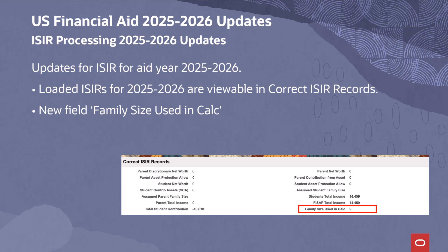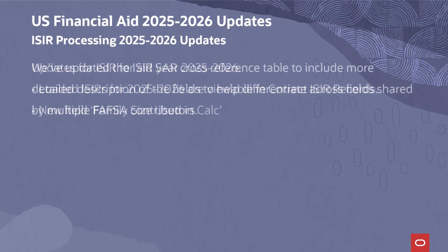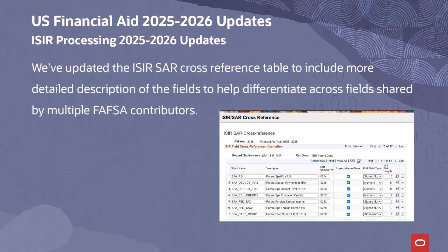We have delivered the ISA for Aid Year 2025-2026. Loaded ISAs for 2025-2026 are viewable in Correct ISA records, as we no longer deliver new components for each aid year. There were no major changes to the ISA file for 2025-2026. A new field, Family Size Used in Calc, has been delivered — a calculated field using logic from the Student Aid Index and Pell Grant Eligibility Guide Appendix C to determine the family size value used in the SAI calculation. The ISA SAR cross-reference table has been updated to include more detailed descriptions of fields, helping differentiate across fields shared by multiple FAFSA contributors.